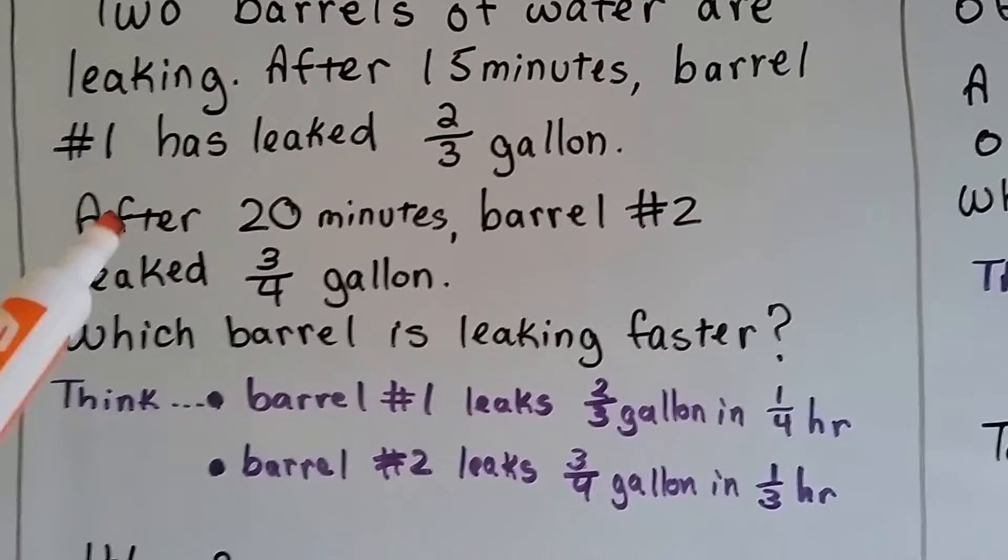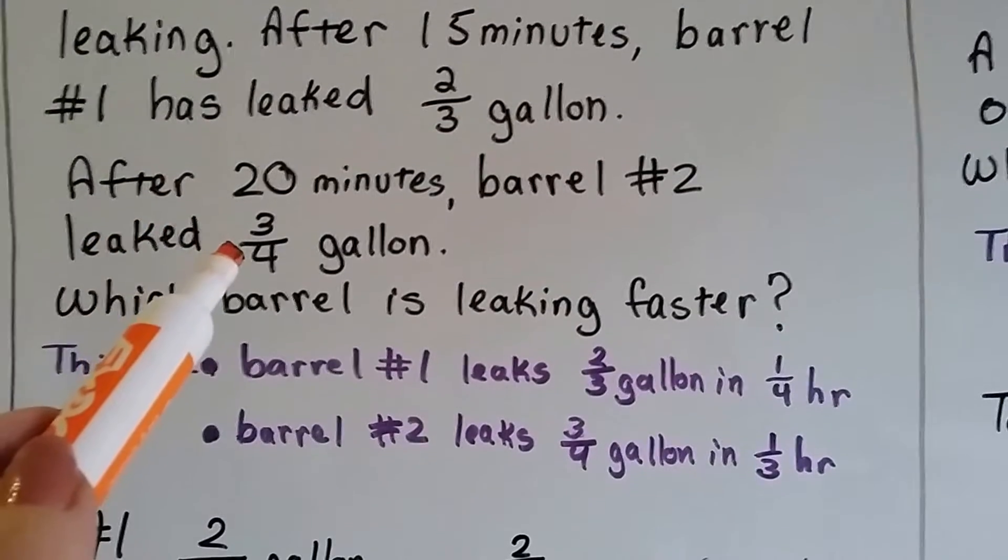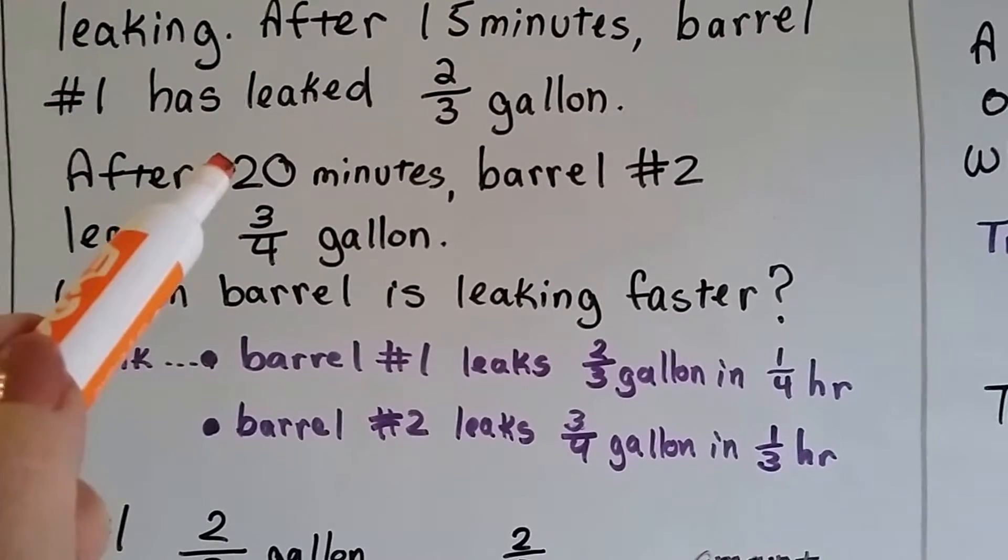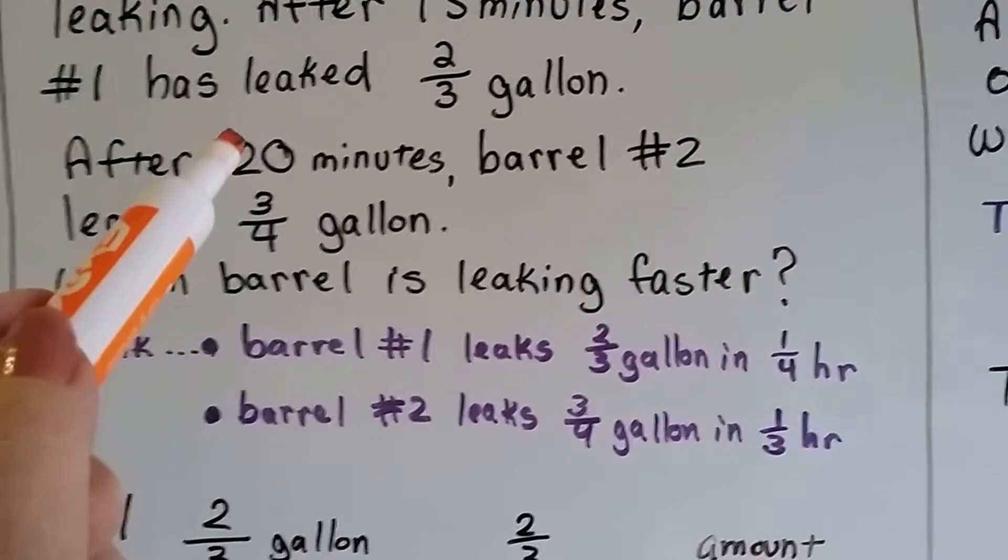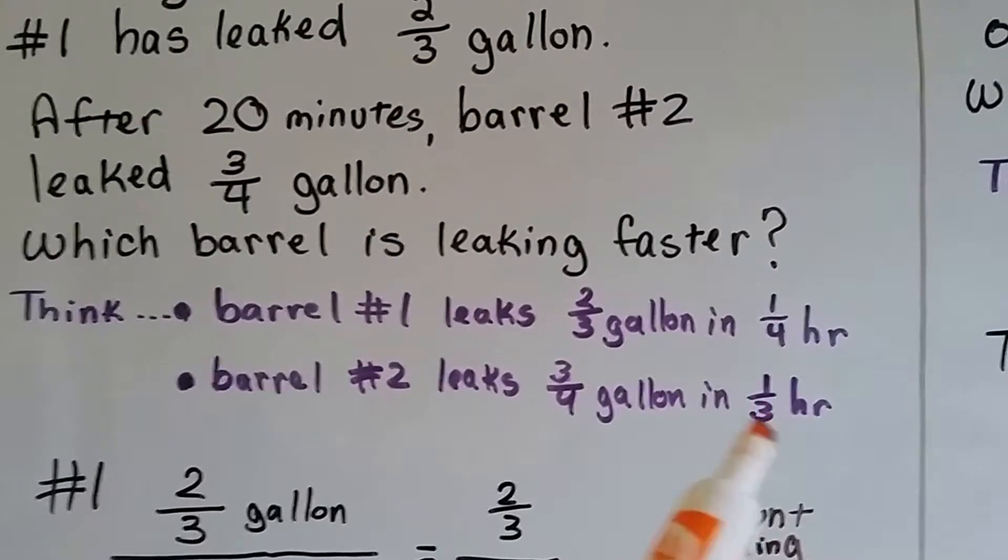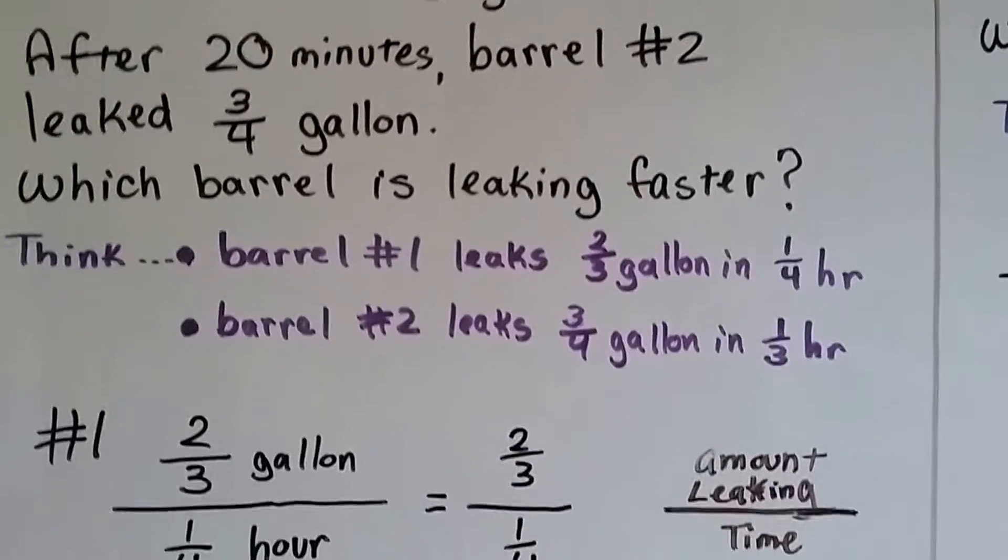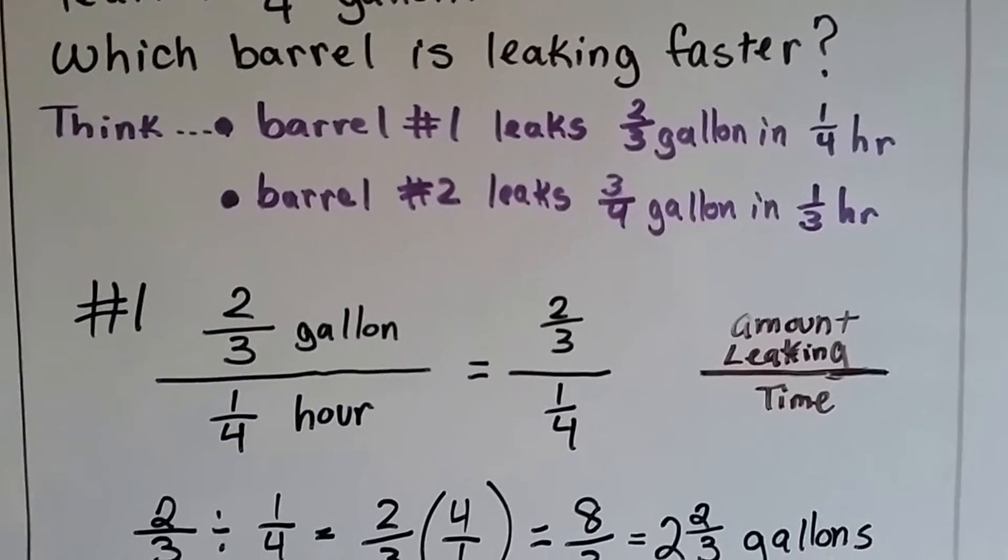And it says that after 20 minutes, barrel number two leaked three-fourths of a gallon. So we find, well, there's three sets of 20 minutes in a 60-minute hour. So that's one-third. So the three-fourths gallon is leaking in one-third of an hour. So that was important to get that out of the way because we needed to do that. We needed to convert those.